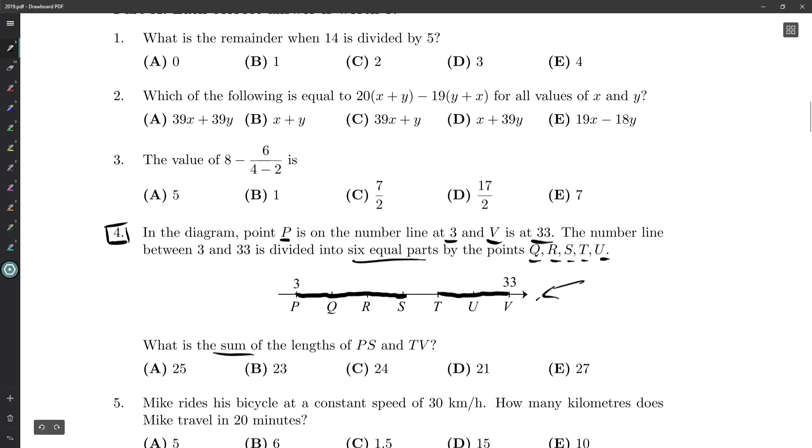So we're being told that the number line is divided into six equal parts, so we know how spaced out the Q, R, S, and T are. We might give a name to that equal spacing, something like X. So we've got six little Xs, and that distance makes up the length from 3 to 33. So we could probably work that out.